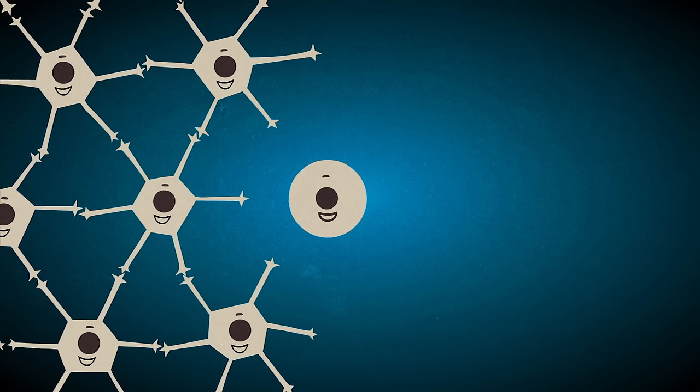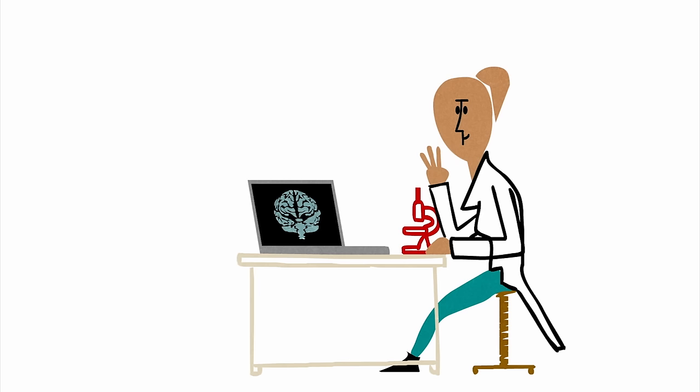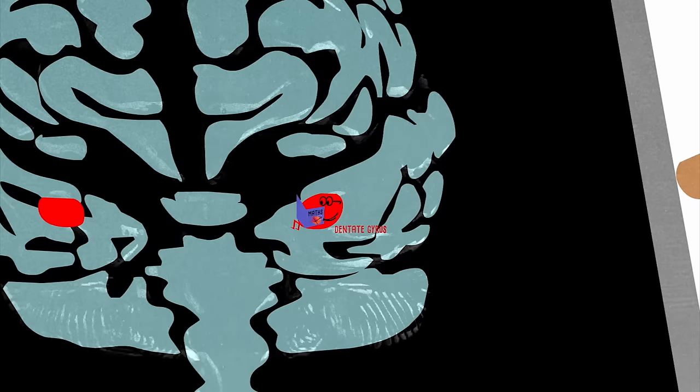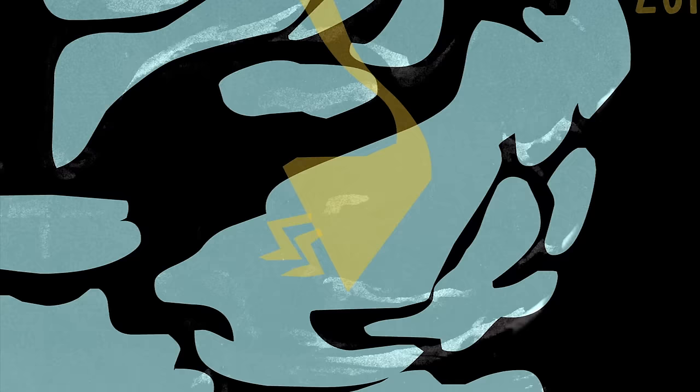The three regions where neurogenesis has been discovered are the dentate gyrus, associated with learning and memory, the subventricular zone, which may supply neurons to the olfactory bulb for communication between the nose and brain, and the striatum, which helps manage movement.